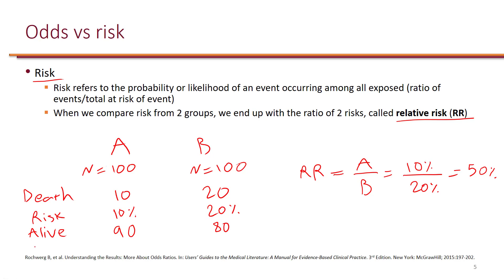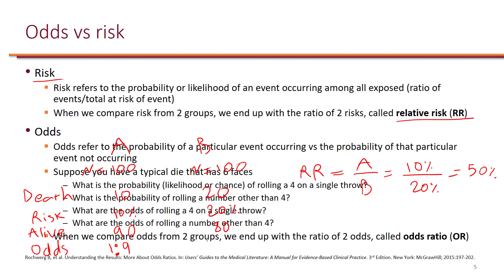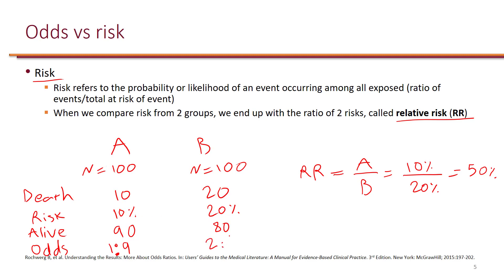Now we can calculate the odds of dying in each group. In group A, the odds of dying is 1 to 9. And in group B, the odds of dying is 2 to 8. We can also do an odds ratio — the ratio of A to B — so 1 to 9 divided by 2 to 8, which is 44%.